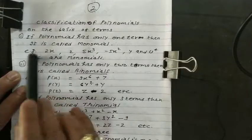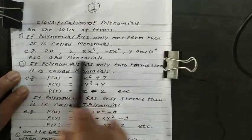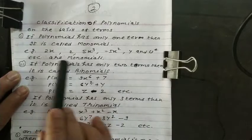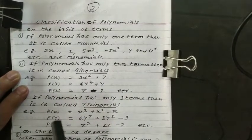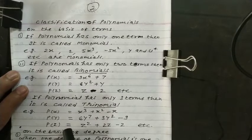Here one term, here one term. In all these polynomials, they have only one term. Therefore, it is classified as monomial.